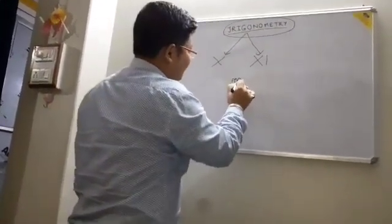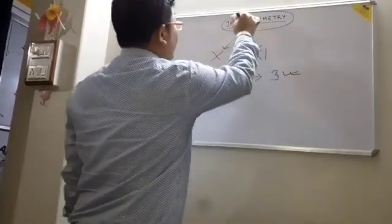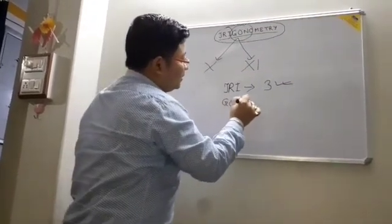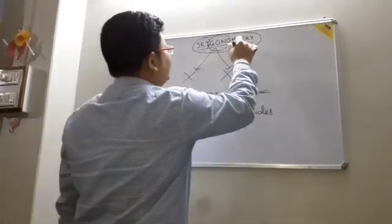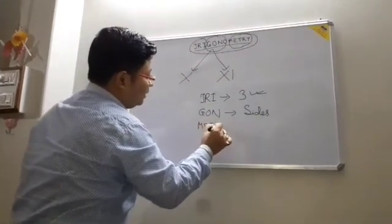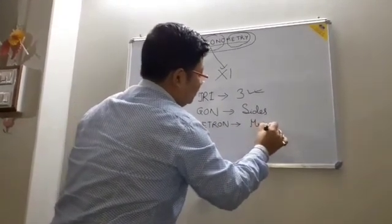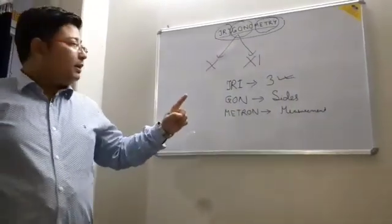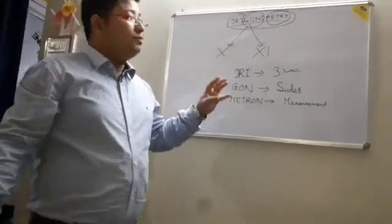The first word is 'Tri' — TRI — meaning three. The second word is 'Gon' — G-O-N — which means side. So 'three sides.' And the third word is 'Metron' — M-E-T-R-O-N — which means measurement. So trigonometry deals with the measurement of three sides.